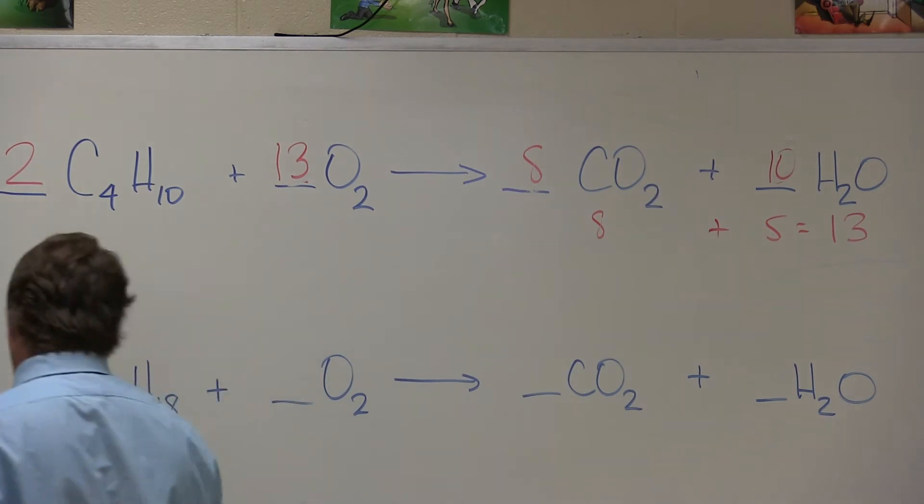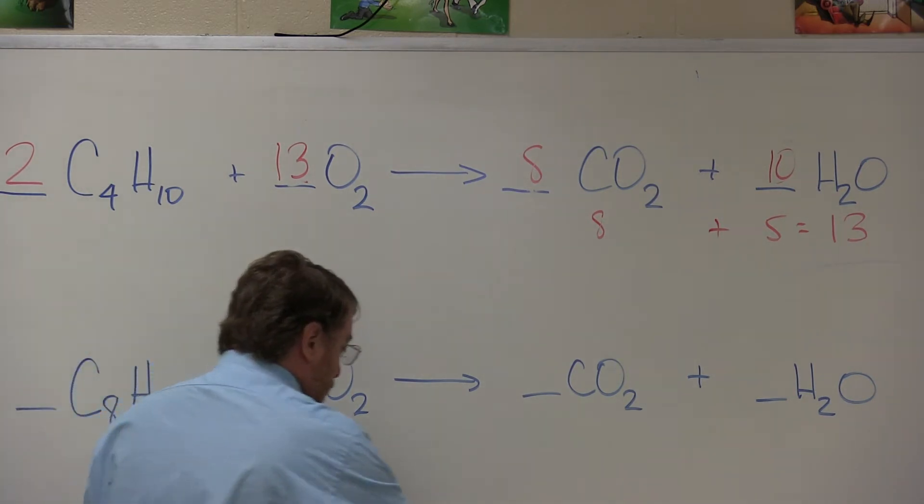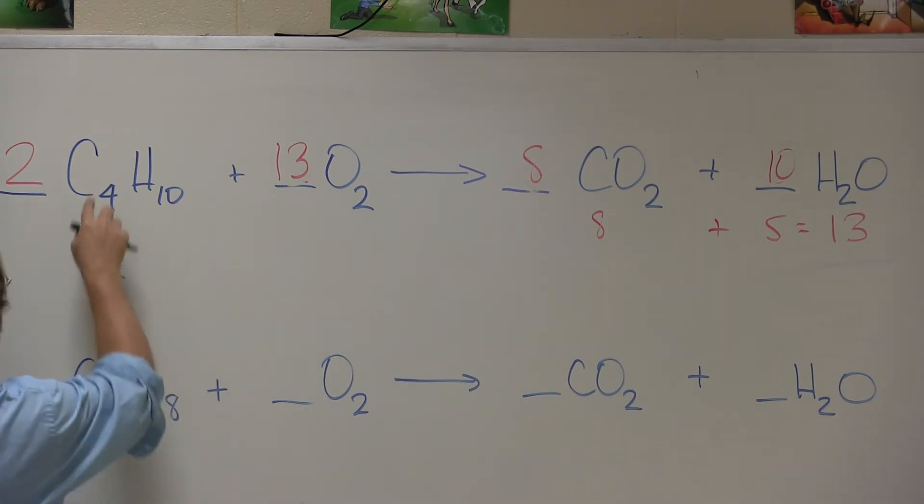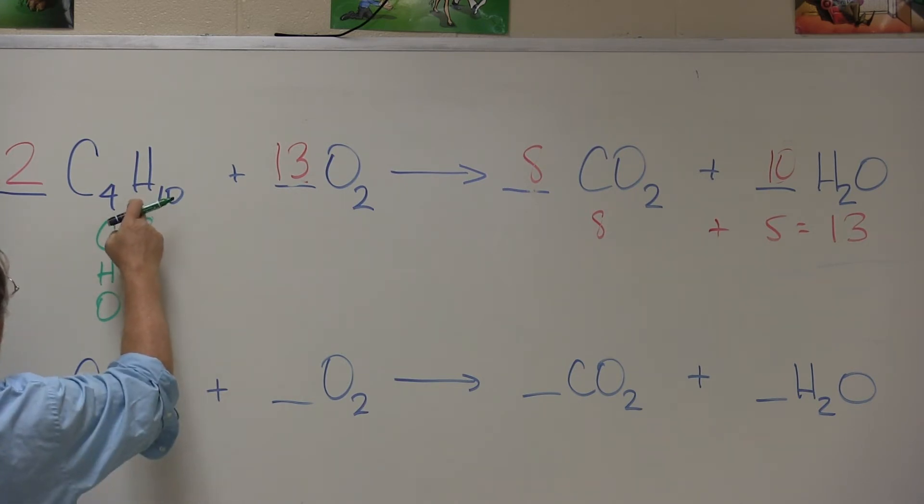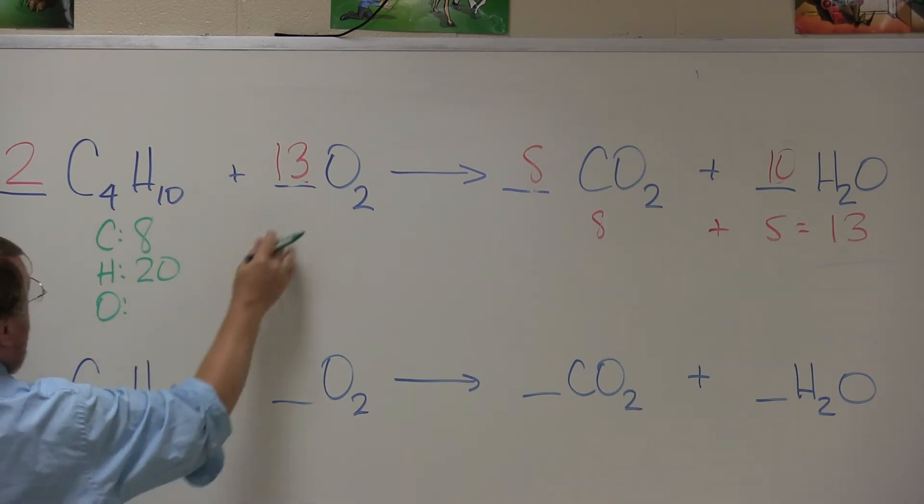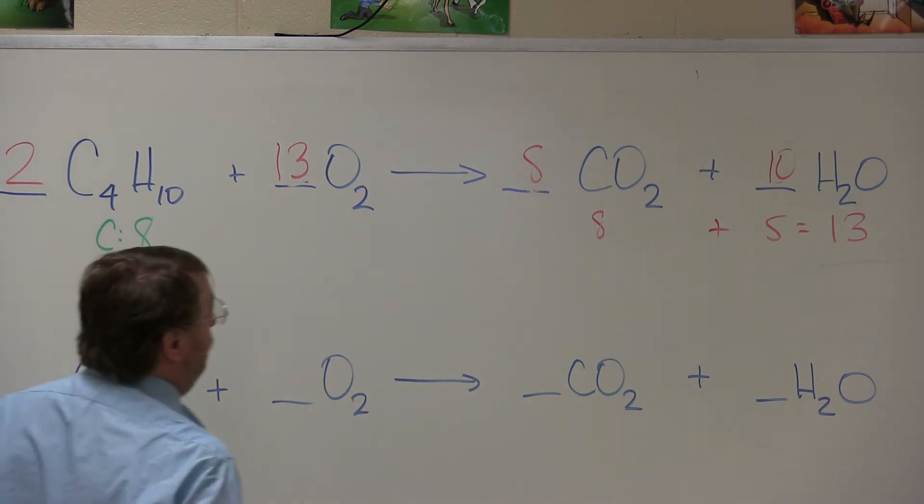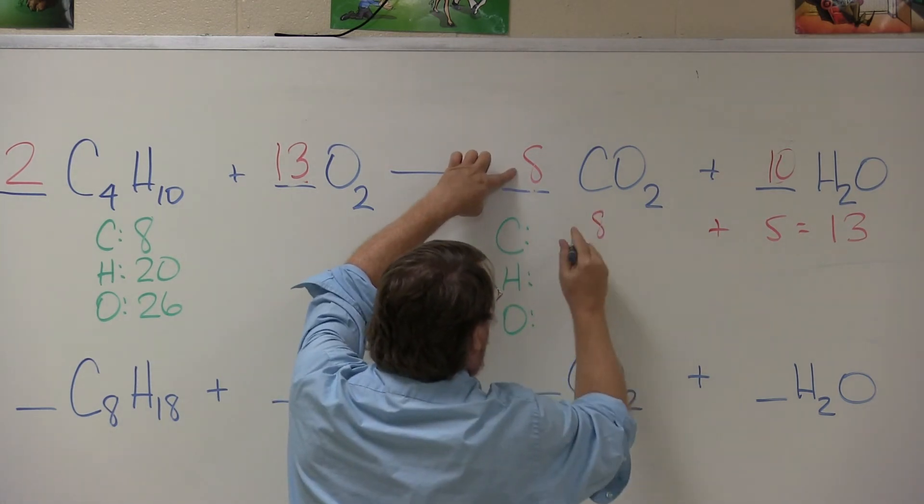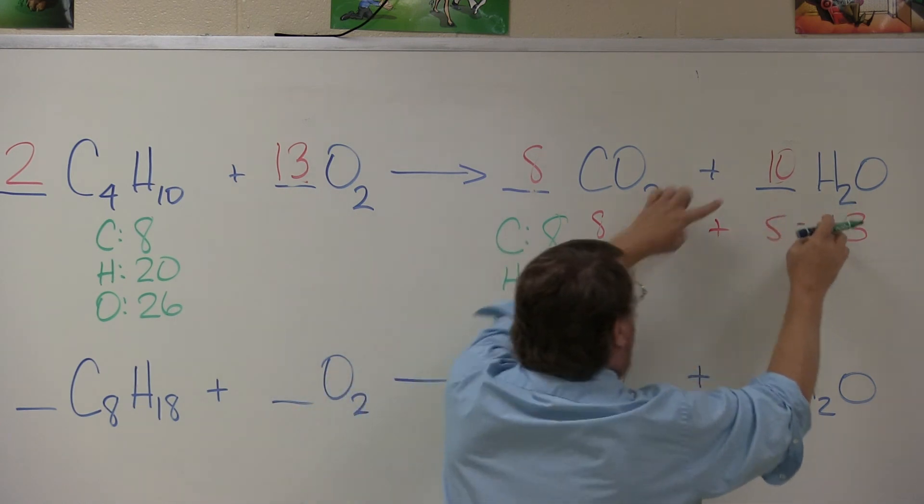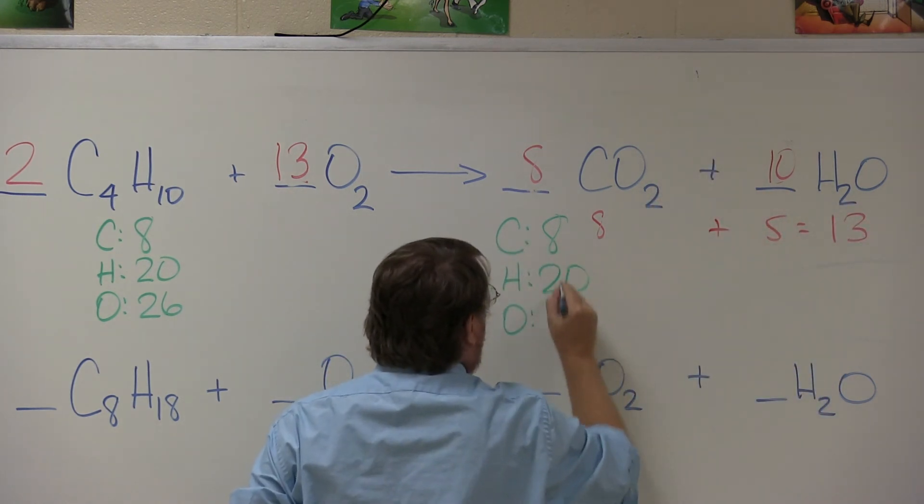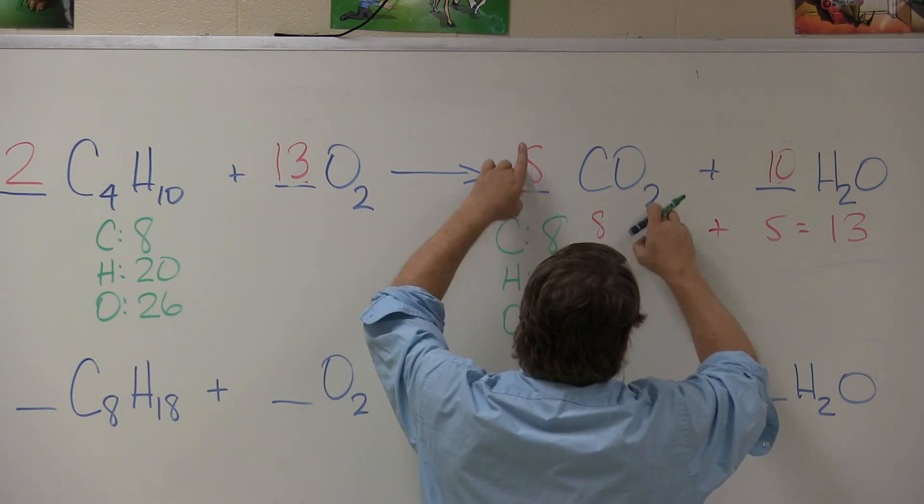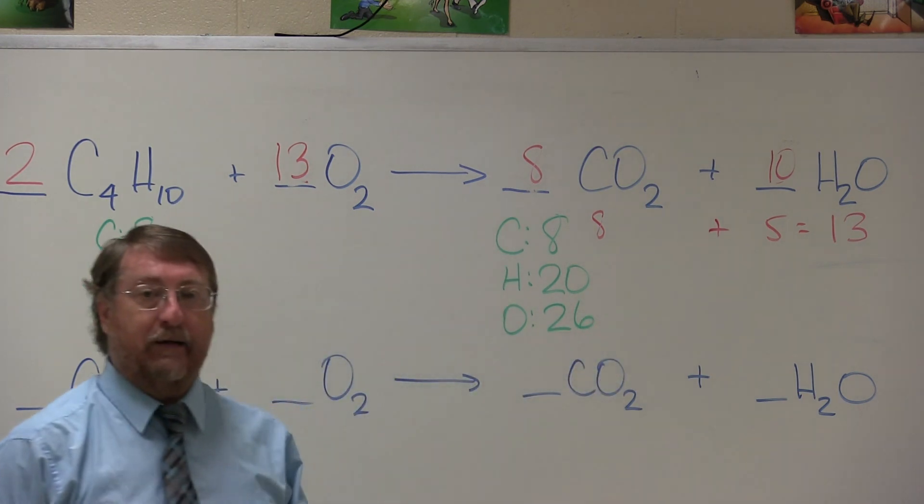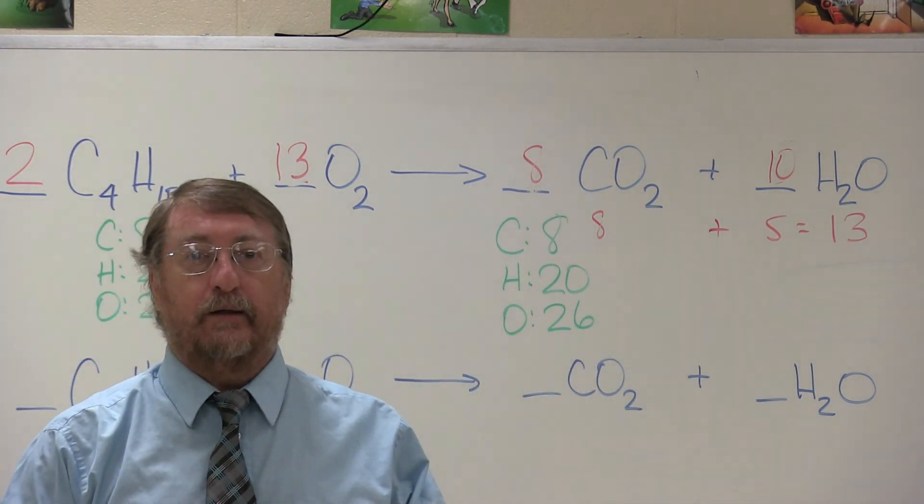Now it's always good to check on the back side. I can say, okay, let me check. Carbon's over here. Hydrogen's over here. Oxygen's over here. Carbon's over here. I have 8. Hydrogen's over here. I have 20. Oxygen's over here. I have 26. Now let's go over here. Carbon, hydrogen, oxygen. Carbon's over here. I have 8. Hydrogen's over here. I have 10 times 2. That's 20. Oxygen's over here. I have 16 plus 10. That's 26. That's a balanced reaction. So that reaction is balanced in total.